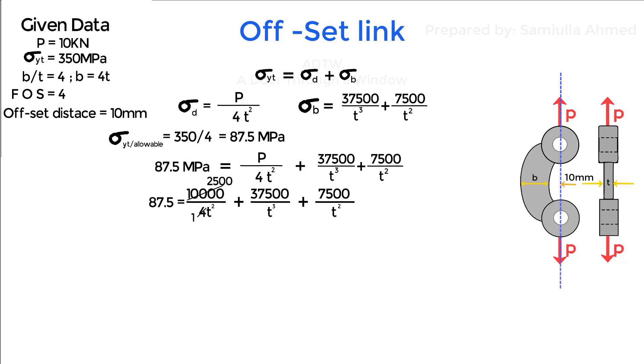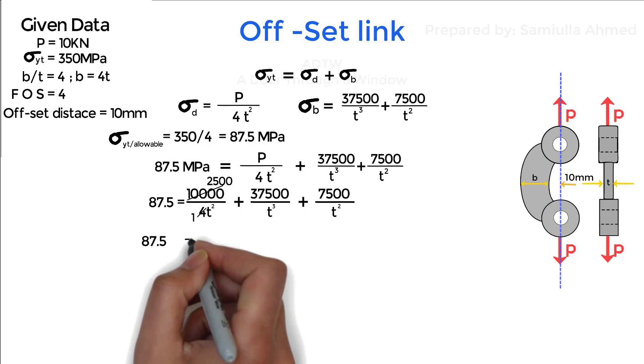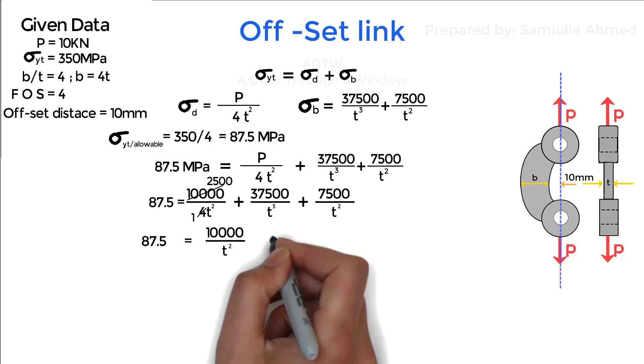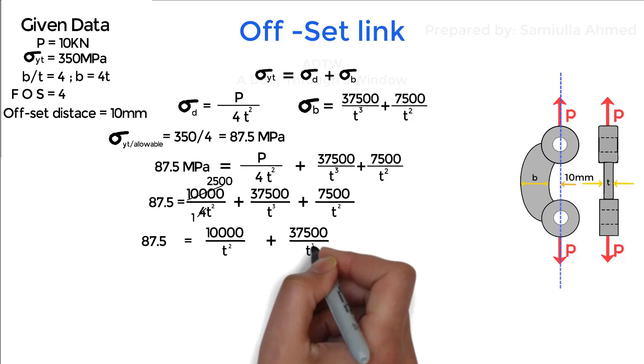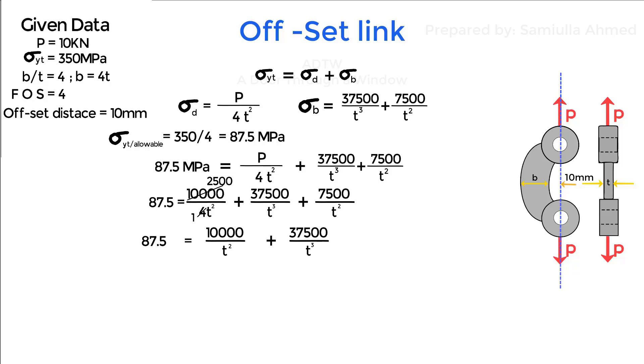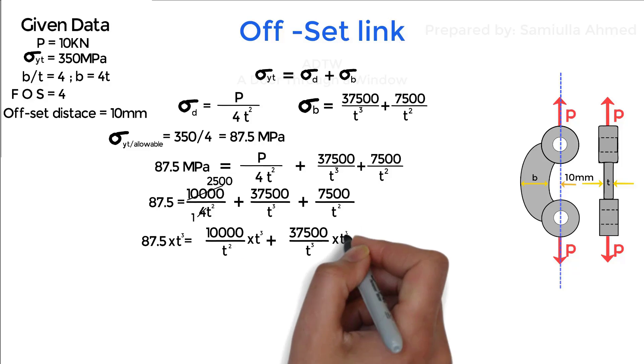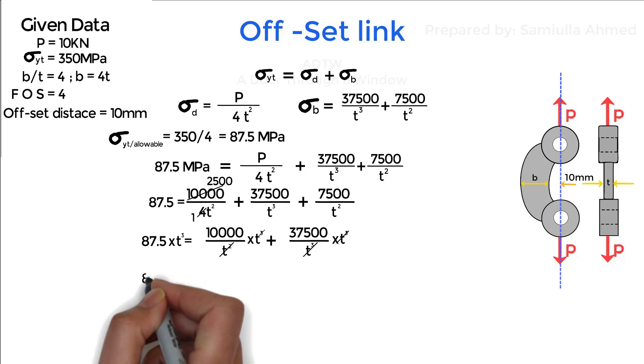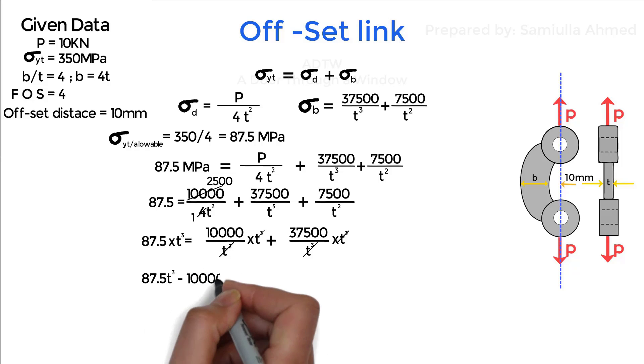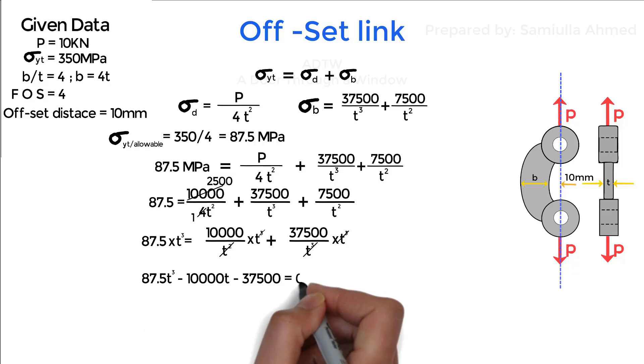After adding the similar terms we have the following equation. Now we will multiply by t cube throughout the equation. After multiplying and rearranging we have a cubic equation which is 87.5t cube minus 10,000t minus 37,500 is equal to 0.